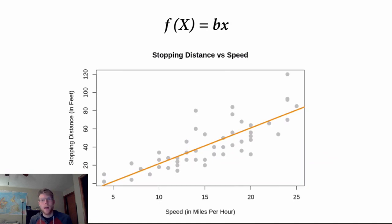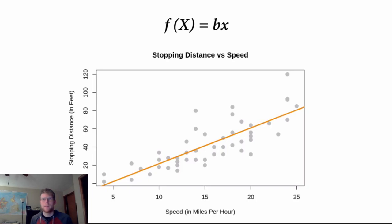This might be a case where a linear model would work well. A linear model is not always going to be the answer, but it is a good option for a lot of different variable relationships. I can draw a line here and see that as speed increases, stopping distance seems to be increasing by about this slope. There's going to be some epsilon for many of these points, meaning speed is not the only thing involved in explaining stopping distance, but speed definitely seems to have some noticeable relationship that we can model.